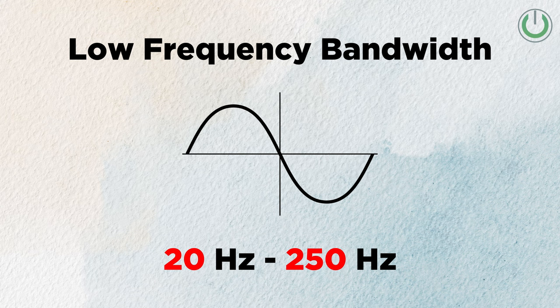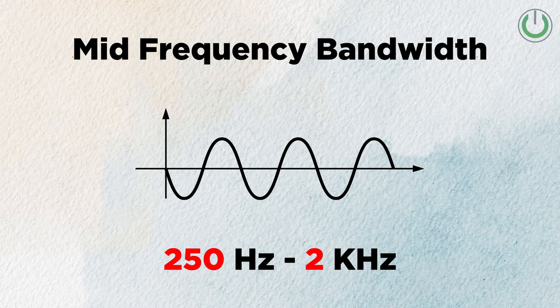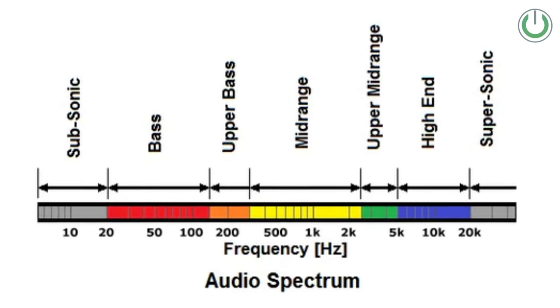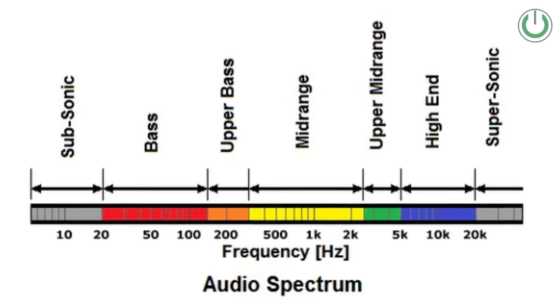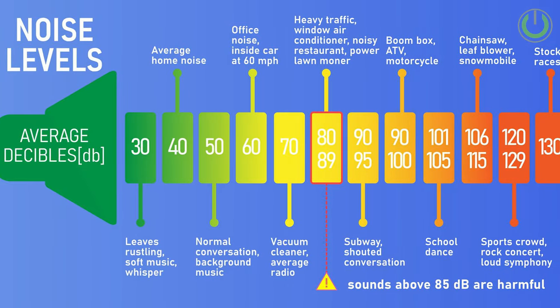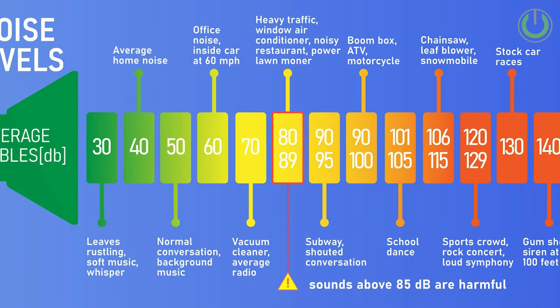This frequency response is divided into three parts. The first is the low frequency bandwidth, anywhere between 20 Hz and 250 Hz. Then we have the mid-range bandwidth, from 250 Hz up to 2 kHz — this is where you mostly hear vocals from movies. Lastly, we have the high frequency range, anything above 2 kHz, which comes from the tweeter.